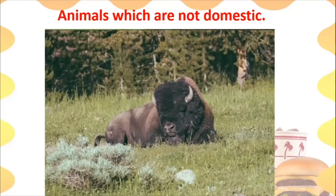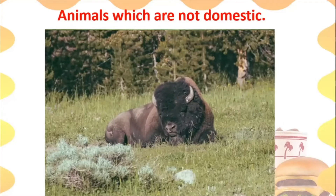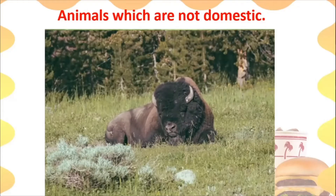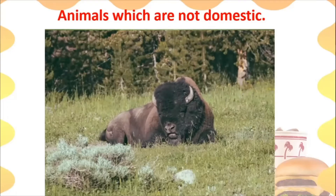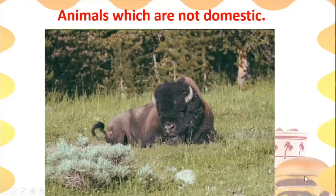When animals enter fields and eat crops, they become a trouble for human beings. But we also have to remember that animals have a right to live on this earth. We human beings have been cutting down jungles and making fields and buildings, leaving these poor animals with no choice. These wild animals that eat grass and plants are vegetarian — that is, they are herbivorous — yet they are wild.